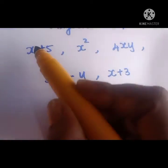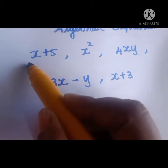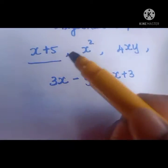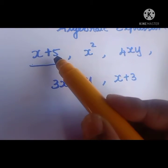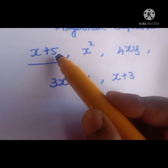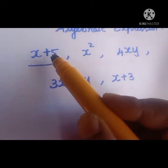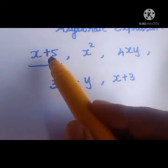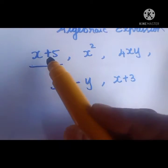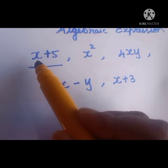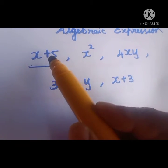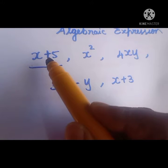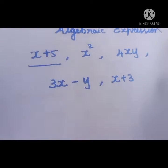See here, x plus 5. x is a variable and 5 is a constant. So it is a combination of variable and constant using the addition symbol.